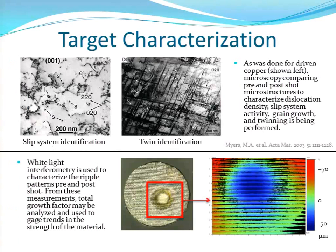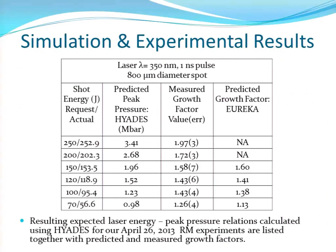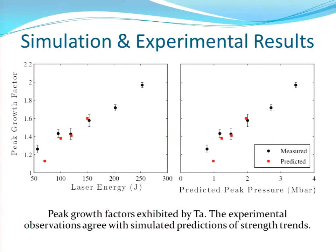These are the recent results from the experiments we did in April. We have the shot energy from Omega in joules, what we predicted the pressure to be using Hiates, the actual measured growth factor we get post-experiment, and the predicted growth factor from the multiscale model. The red dots are the multiscale model results, and the black dots are the experimental results. As you can see, they actually match pretty well — so we were excited to see that.